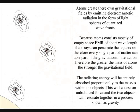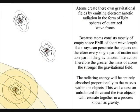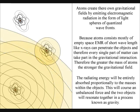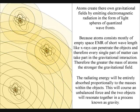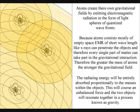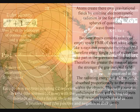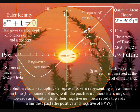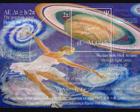Because atoms consist mostly of empty space, electromagnetic radiation of short wavelengths, like X-rays, can penetrate the objects, and therefore every single part of matter can take part in the gravitational interaction. The gravitational field will propagate at the same speed that electromagnetic radiation moves, the speed of light, therefore there is no instantaneous action at a distance.